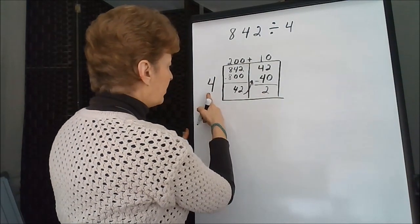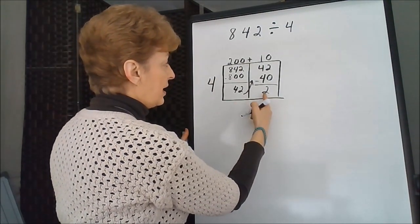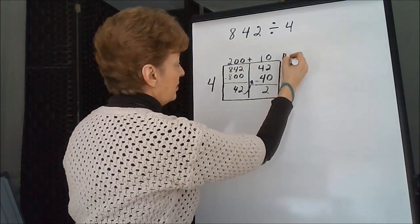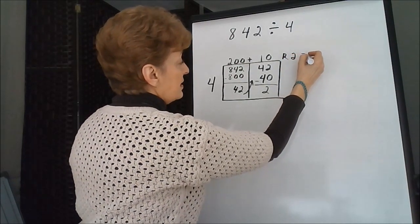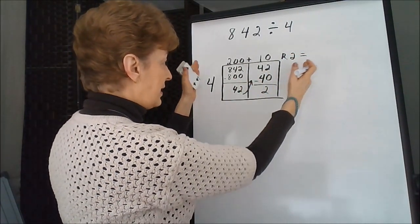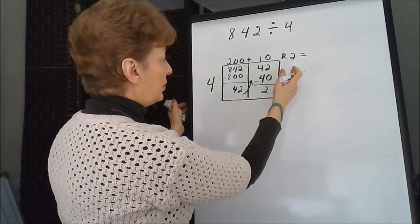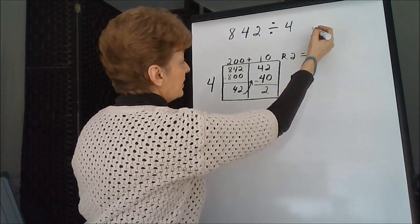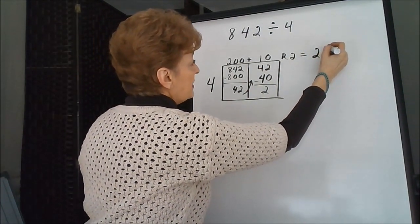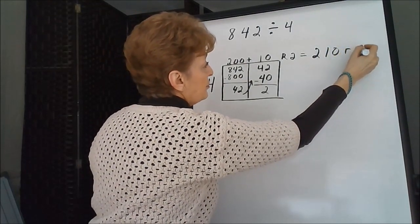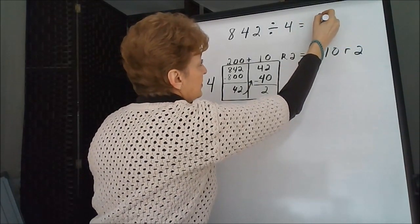2 is smaller than 4, so I know that I'm finished. This is the remainder. So if I take the expanded number and put it all together, reconstruct it, we've got 210 remainder 2. And that's the answer to this problem.